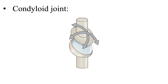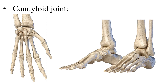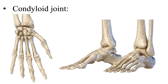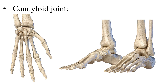Next we have a condyloid joint. This joint is formed when an oval-shaped surface fits with an ellipsoidal socket or cavity. Therefore, this joint is also known as an ellipsoidal joint, which allows for flexion, extension, abduction, and adduction. For example, we have the radial carpal joint, where the distal end of the radius forms an ellipsoidal socket that meets the scaphoid carpal, which creates an oval-shaped surface. Also the metacarpal phalangeal joints and metatarsal phalangeal joints create condyloid joints.